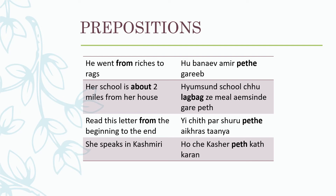He went from rags to riches: hu banav ameer petha gariv. From is 'petha' in this sentence. Her school is about two miles from her house: humsun school cho lag bag zhmeel ameer petha gariv. About is 'lag bag'. Read this letter from the beginning to the end: yee jit par shuru petha urkhras taan. From over here is 'petha'.